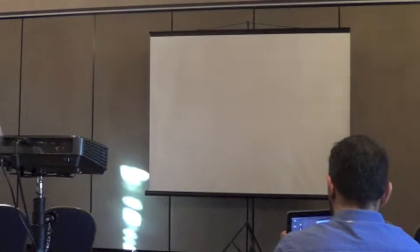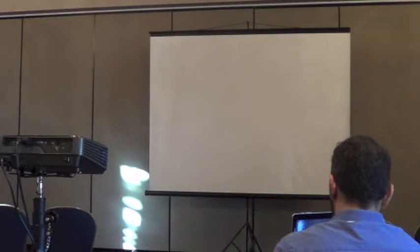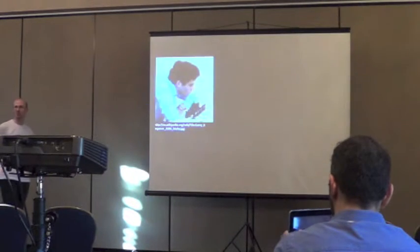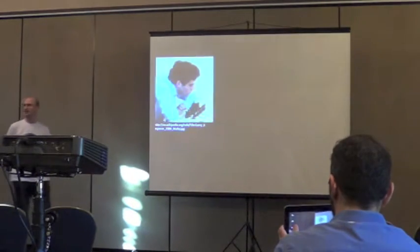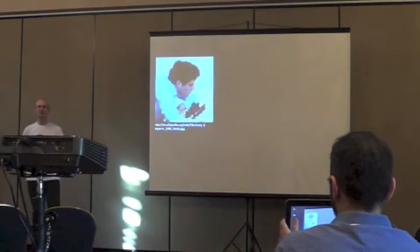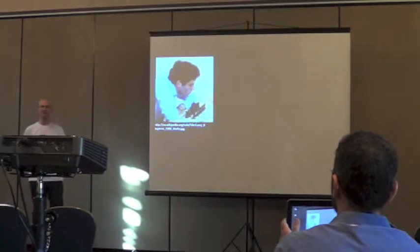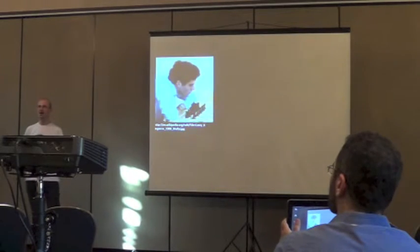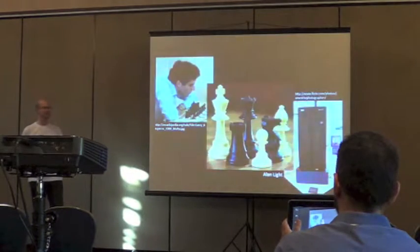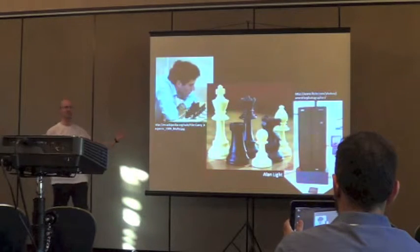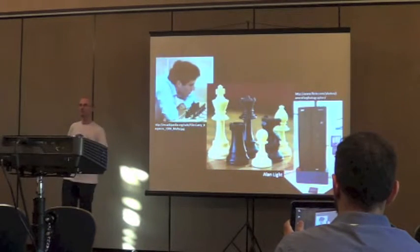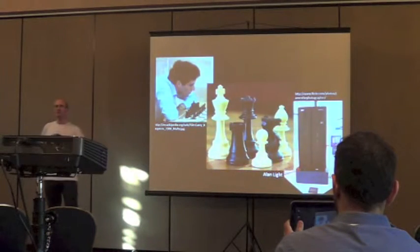On the 11th of May 1997, the then world champion of chess, Garry Kasparov, sat down to play a game against a rather unusual opponent: the IBM chess computer Deep Blue. And in an historic event, Deep Blue defeated Kasparov.